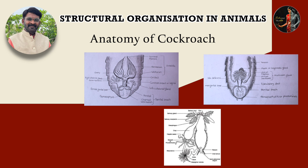The hindgut is broader than the midgut and is divisible into ileum, colon, and rectum. The ileum is the small intestine, colon is the large intestine. The ileum is short and narrow bearing short spines. A ring of about 100 to 150 fine yellow colored thread-like filaments — the Malpighian tubules — are joined to the beginning of the ileum.